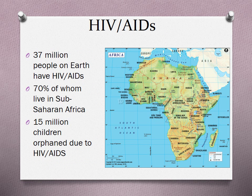Then we get into HIV and AIDS. 37 million people on Earth have HIV or AIDS, and 70% of those people live in sub-Saharan Africa. Looking at a map of Africa, you'll see the Saharan Desert cutting across the top. North of the Sahara are countries like Egypt, Libya, Tunisia, and Morocco — countries often more connected to what we think of as the Middle East.